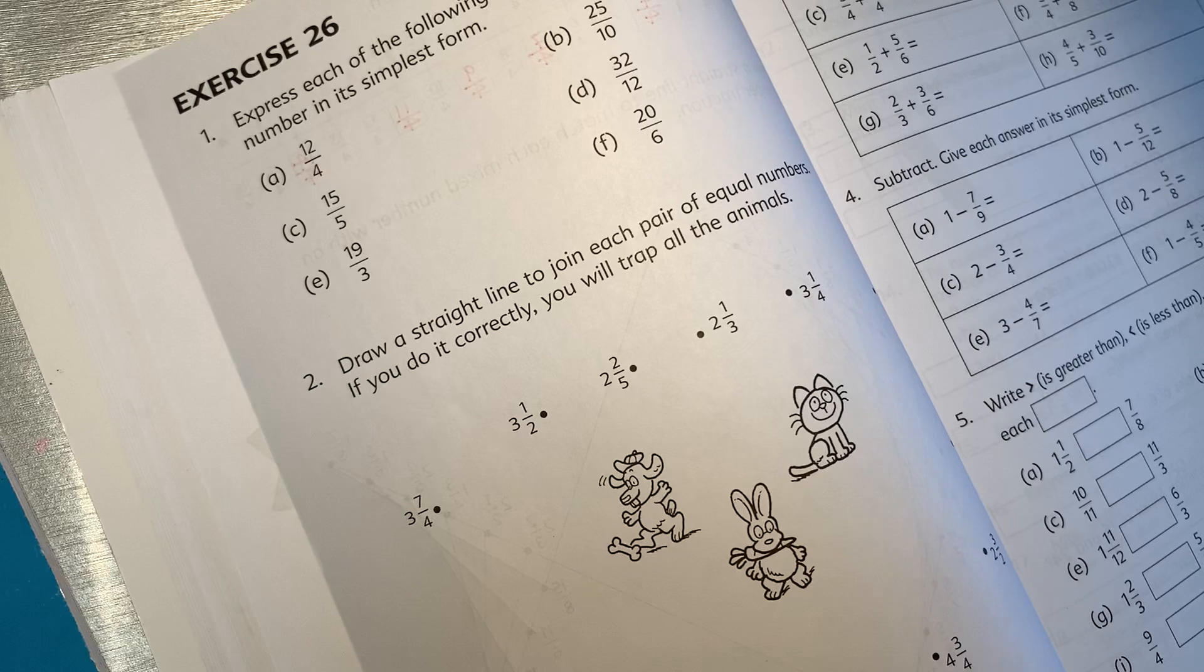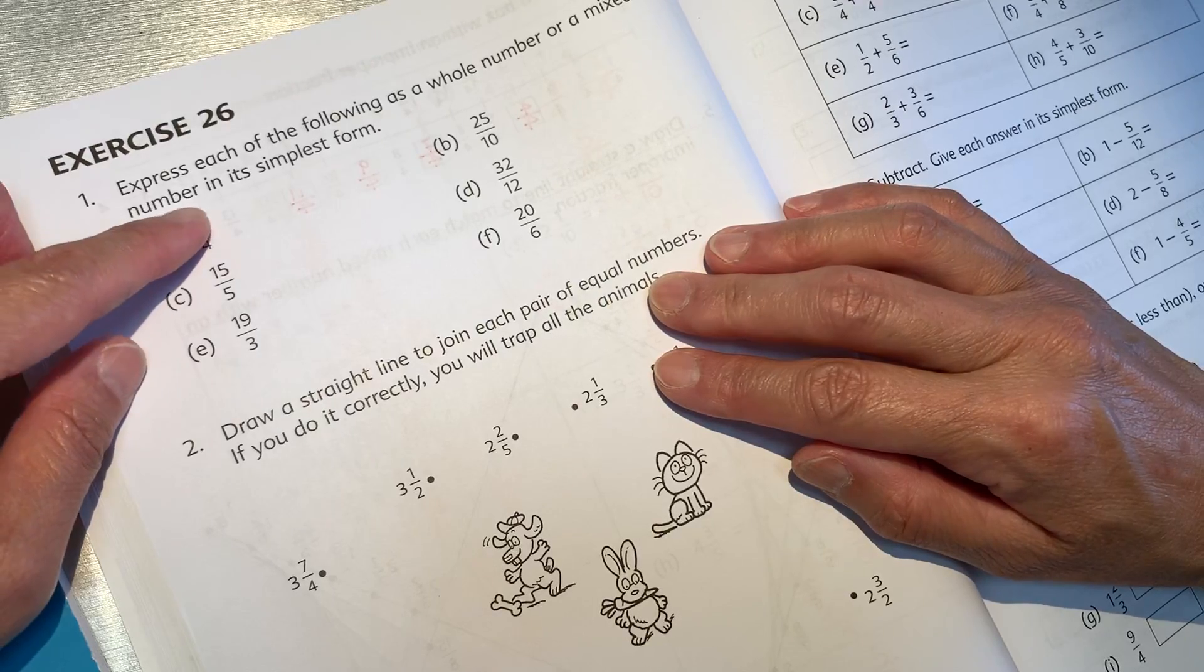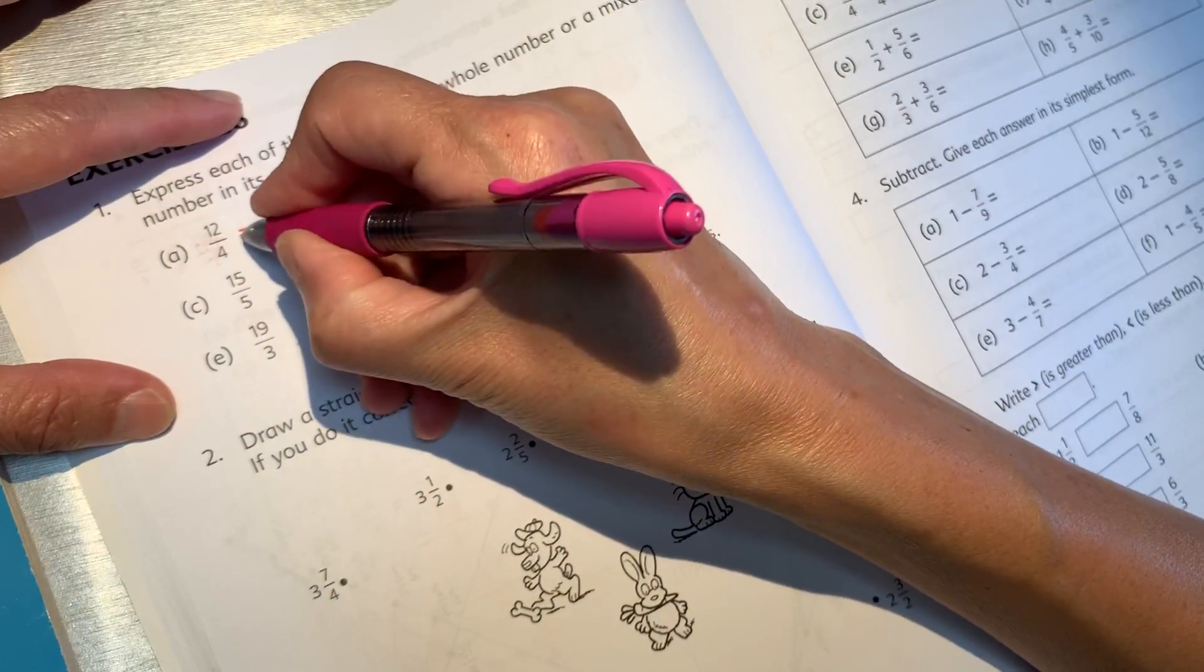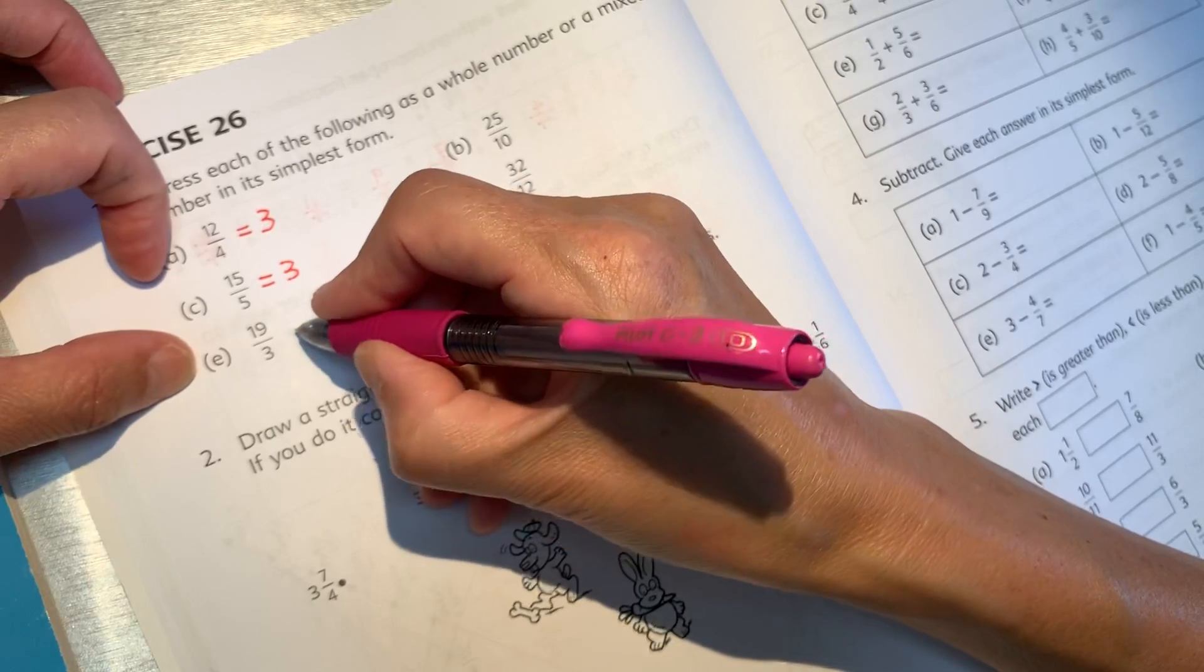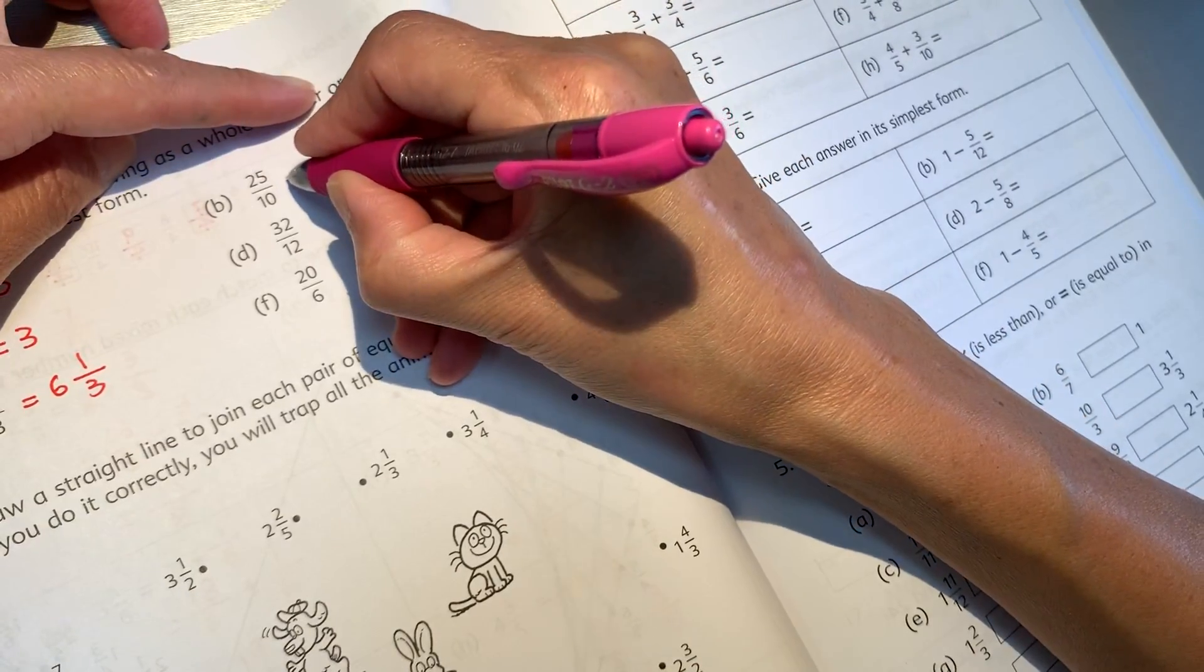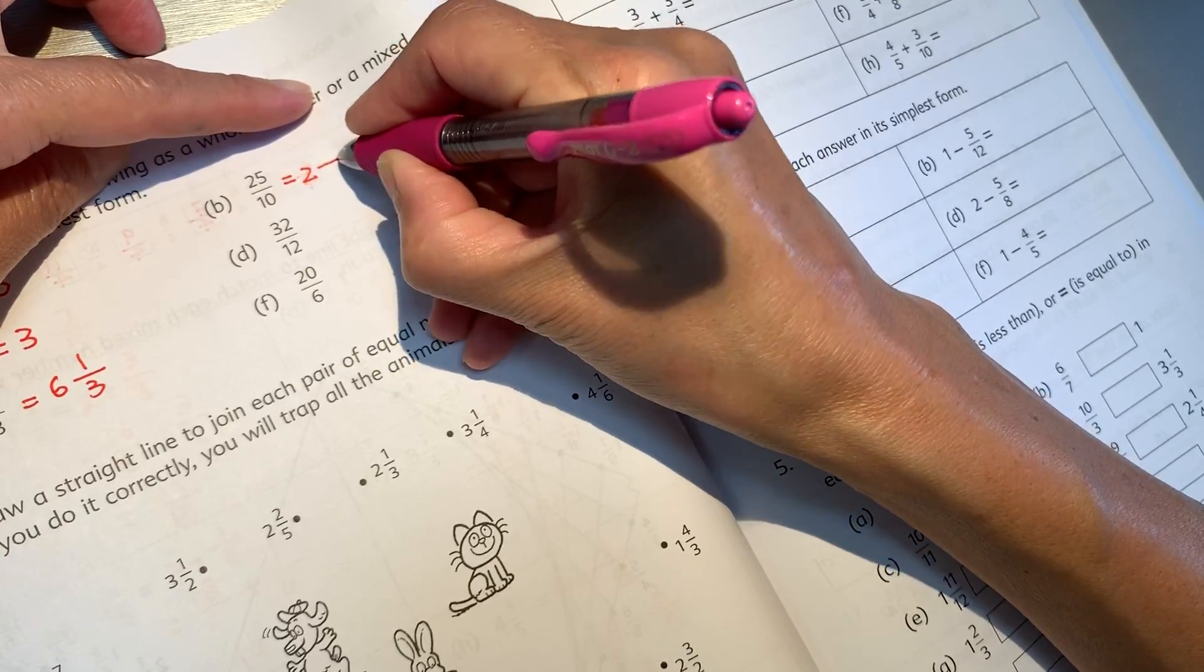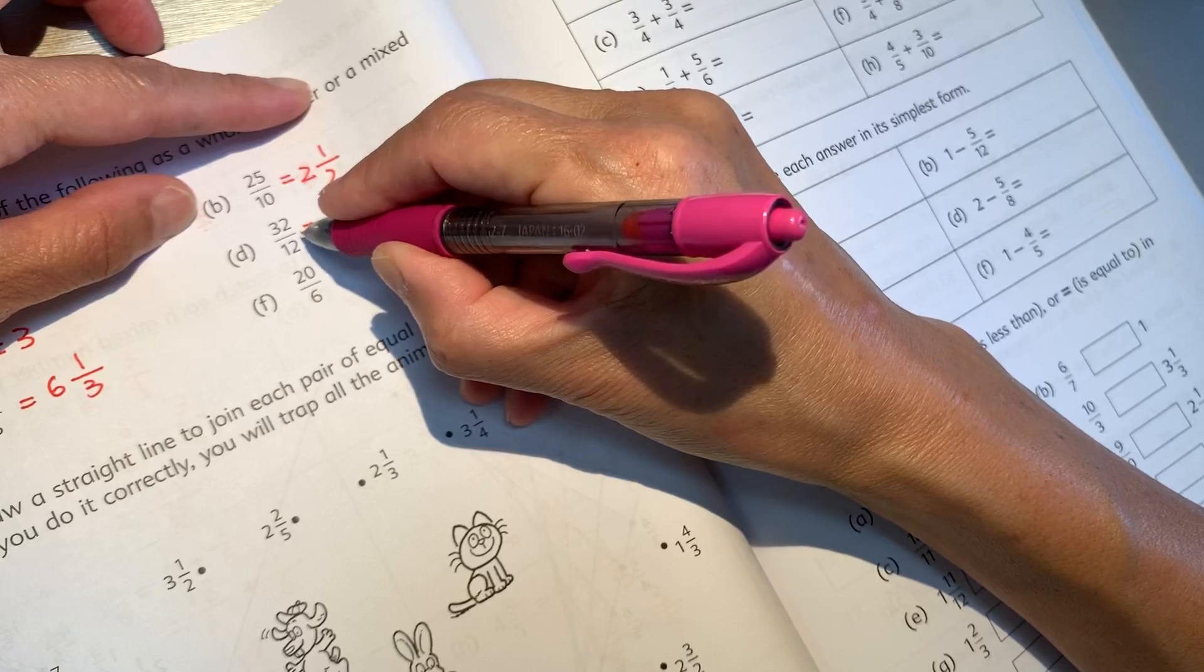Express each following as a whole number or mixed number in its simplest form. A equal to 3, C equal to 3, E equal to 6 and 1 third. Equal to, aha, 2, 10 out of 5, so it's a half.